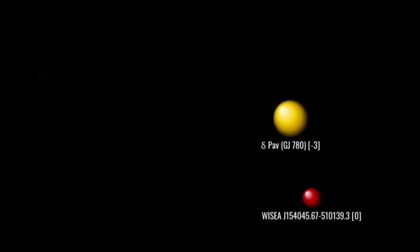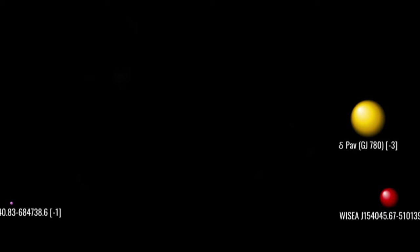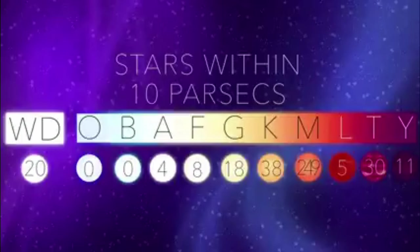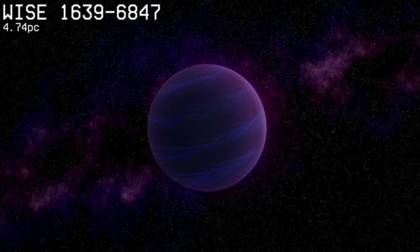Rimward and one-parsec south of that, we find Y1639, a brown dwarf at the very top of Y-class, the dimmest stellar classification, meaning that if it were any smaller, it would be a planet. While the state of knowledge on this object is poor, its motion suggests it is quite old.